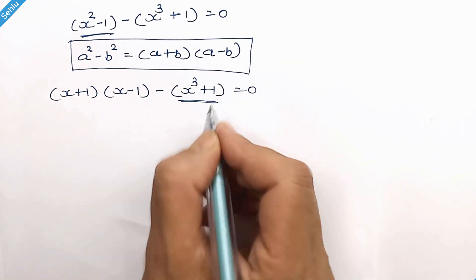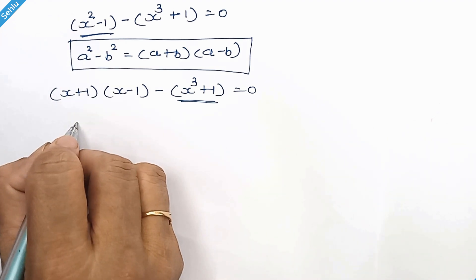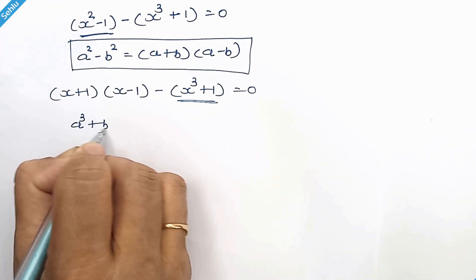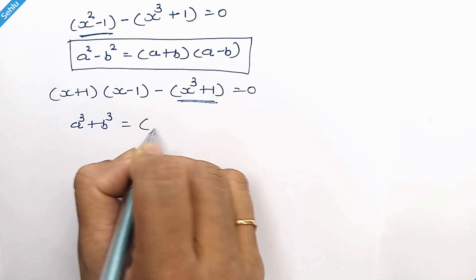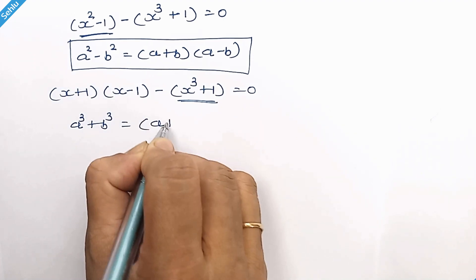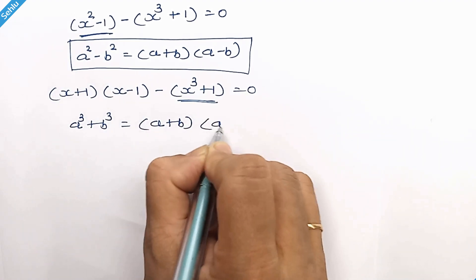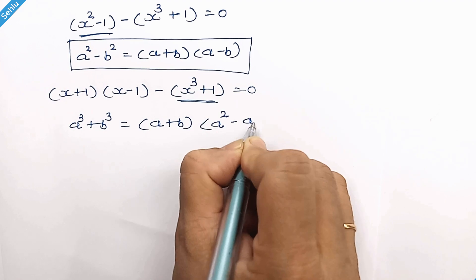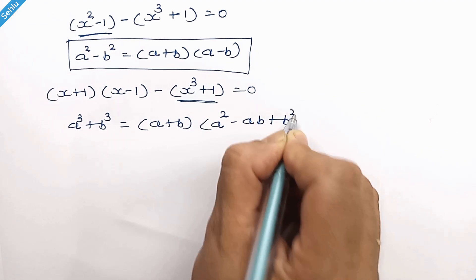And here we will apply the identity a cubed plus b cubed equals (a plus b) times (a squared minus ab plus b squared).